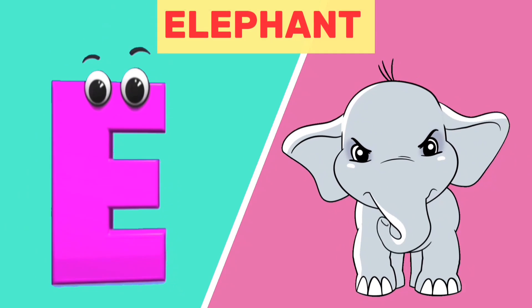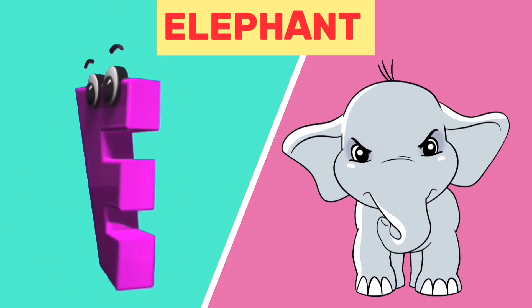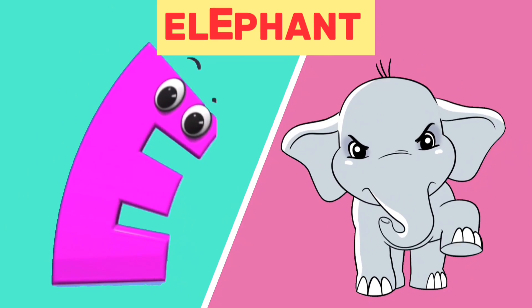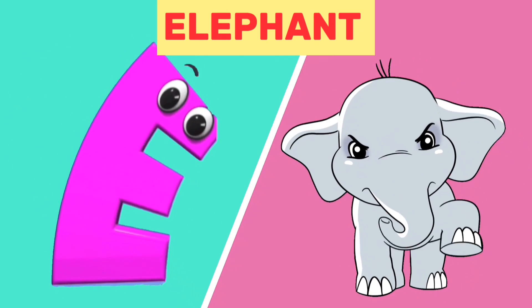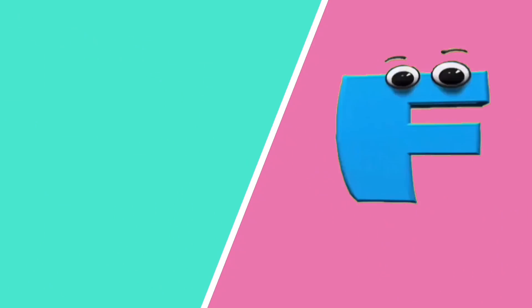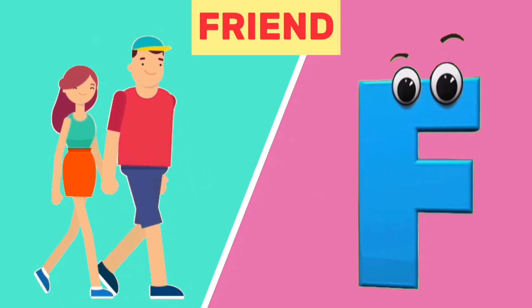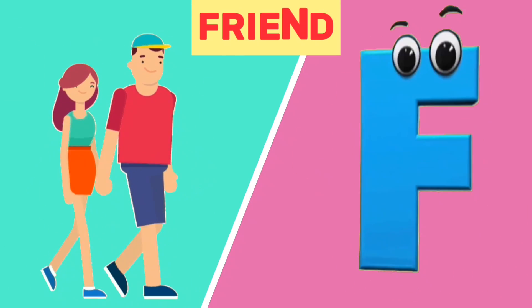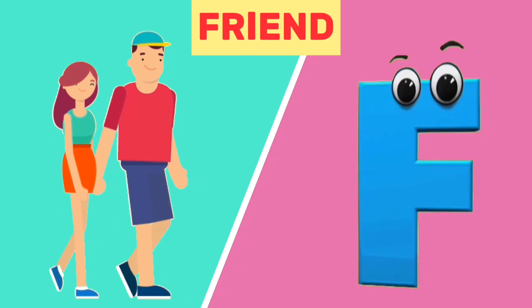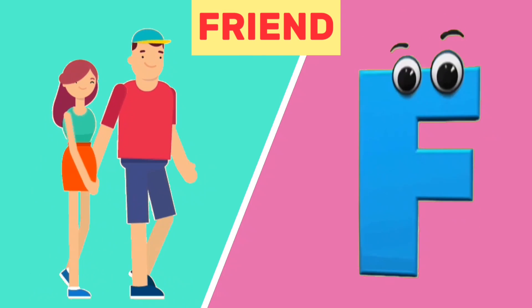E is for elephant. E, e. Elephant. F is for friend. F, f. Friend.